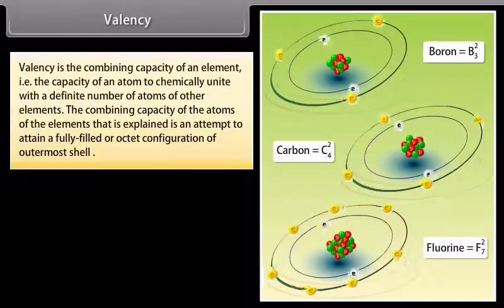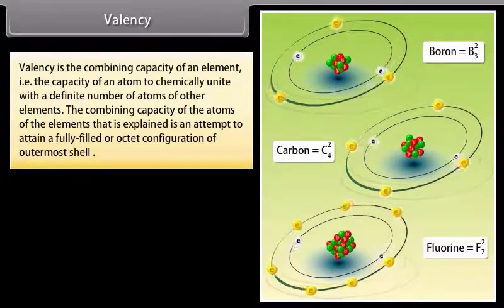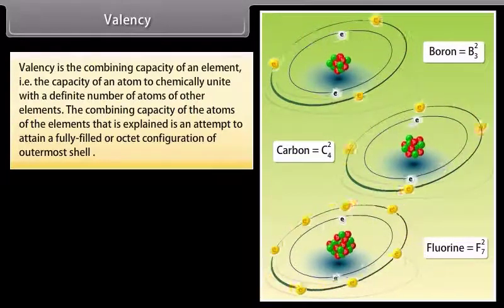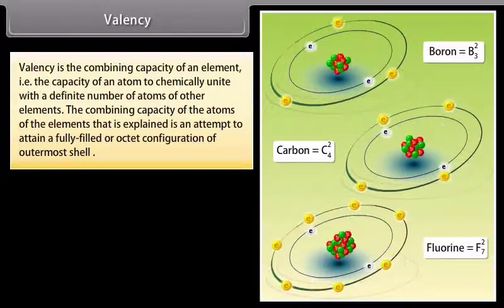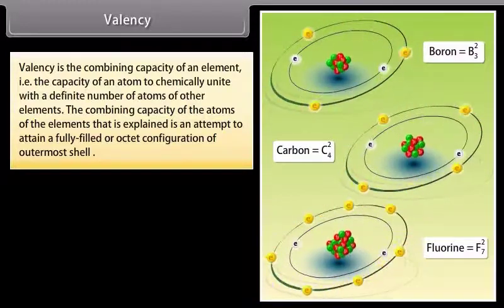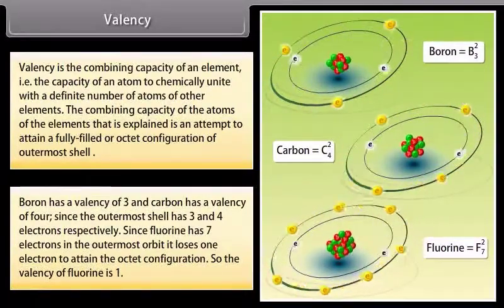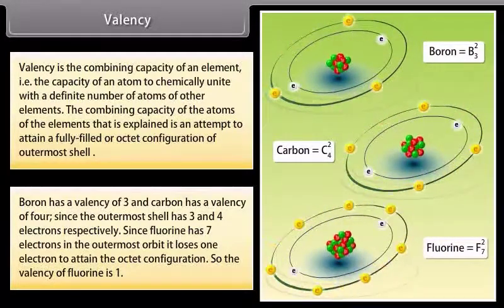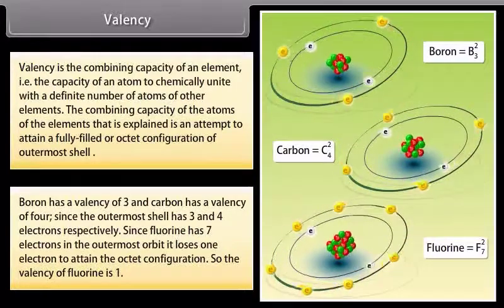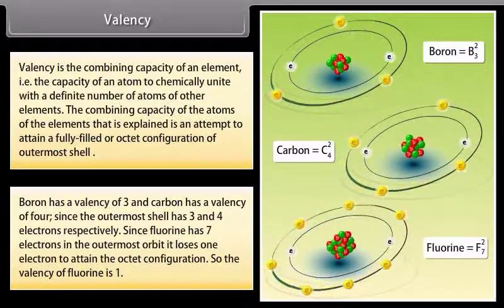Valency is the combining capacity of an element — that is, the capacity of an atom to chemically unite with a definite number of atoms of other elements. The combining capacity of atoms is explained by their attempt to attain a fully filled or octet configuration of the outermost shell. Boron has a valency of 3 and carbon has a valency of 4, since their outermost shells have 3 and 4 electrons respectively. Since fluorine has 7 electrons in the outermost orbit, it loses 1 electron to attain octet configuration, so the valency of fluorine is 1.